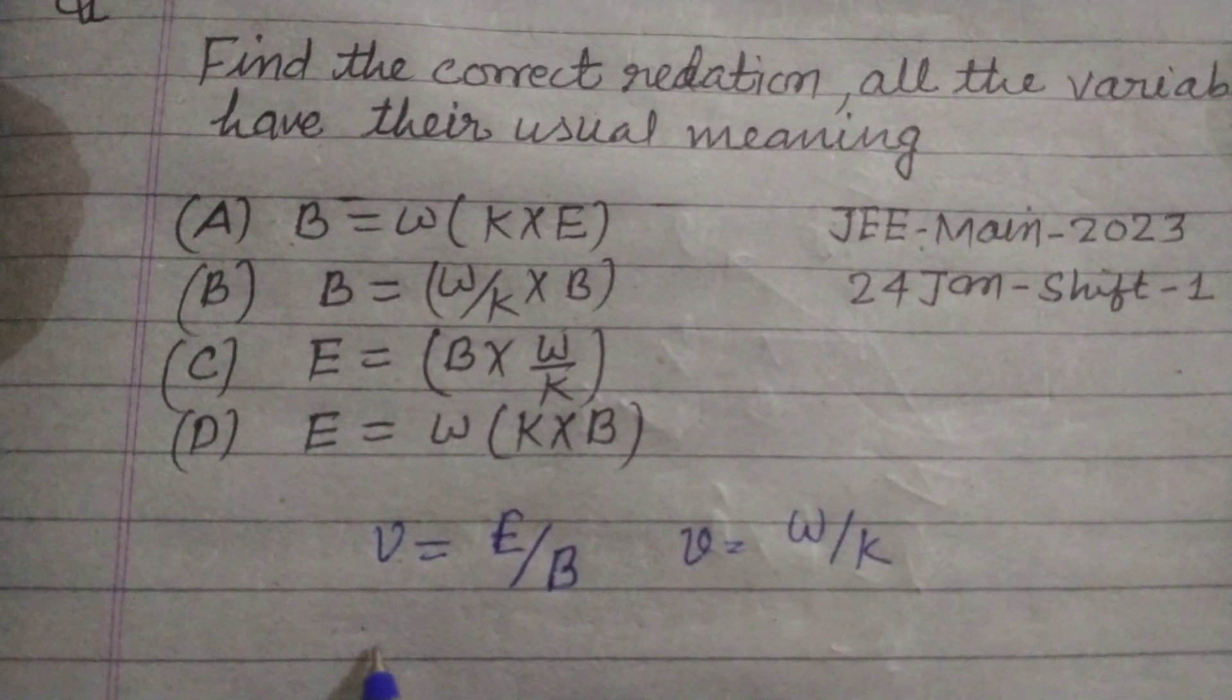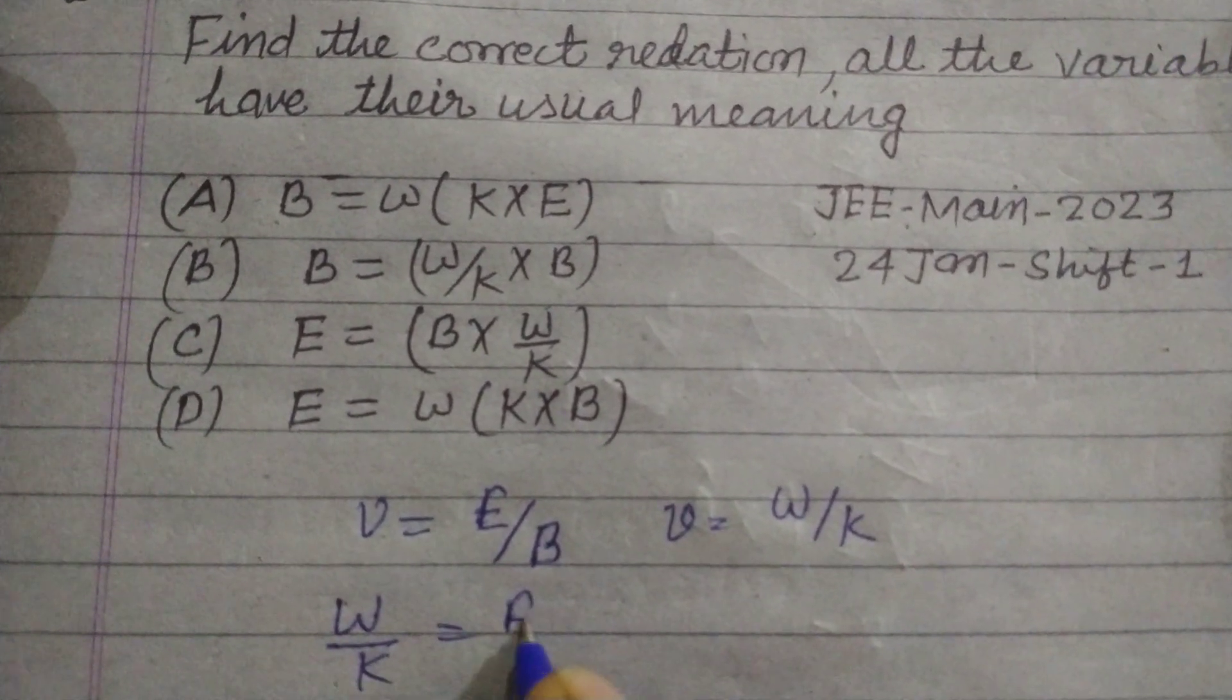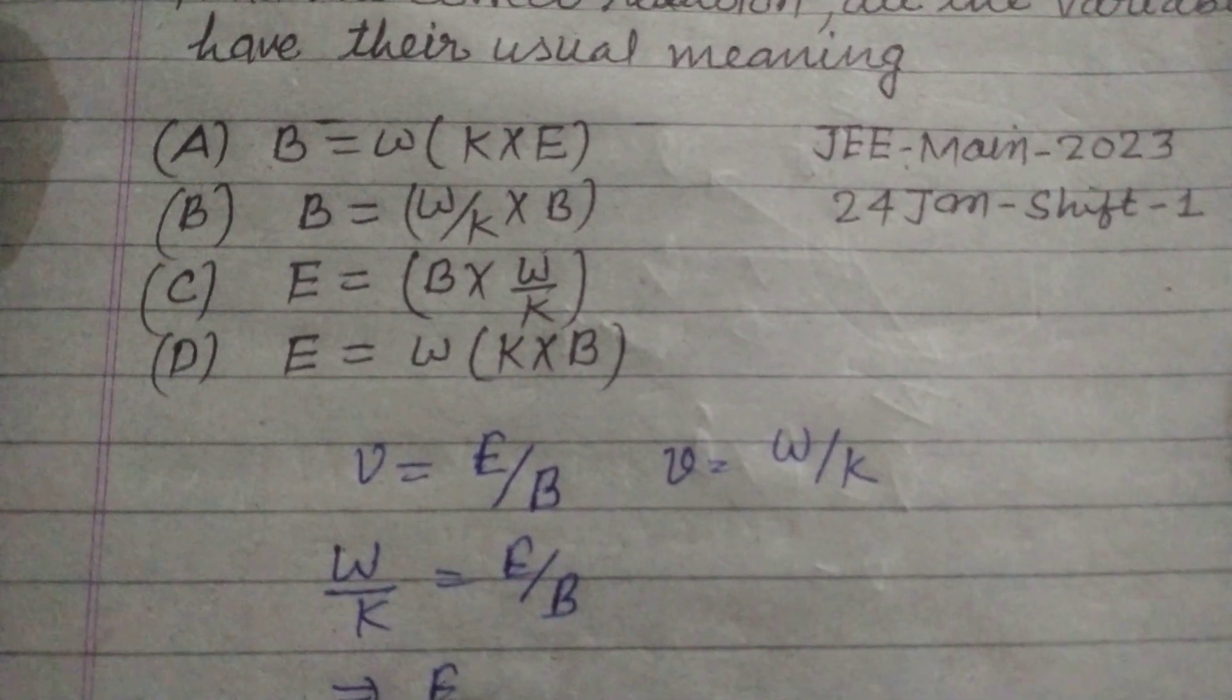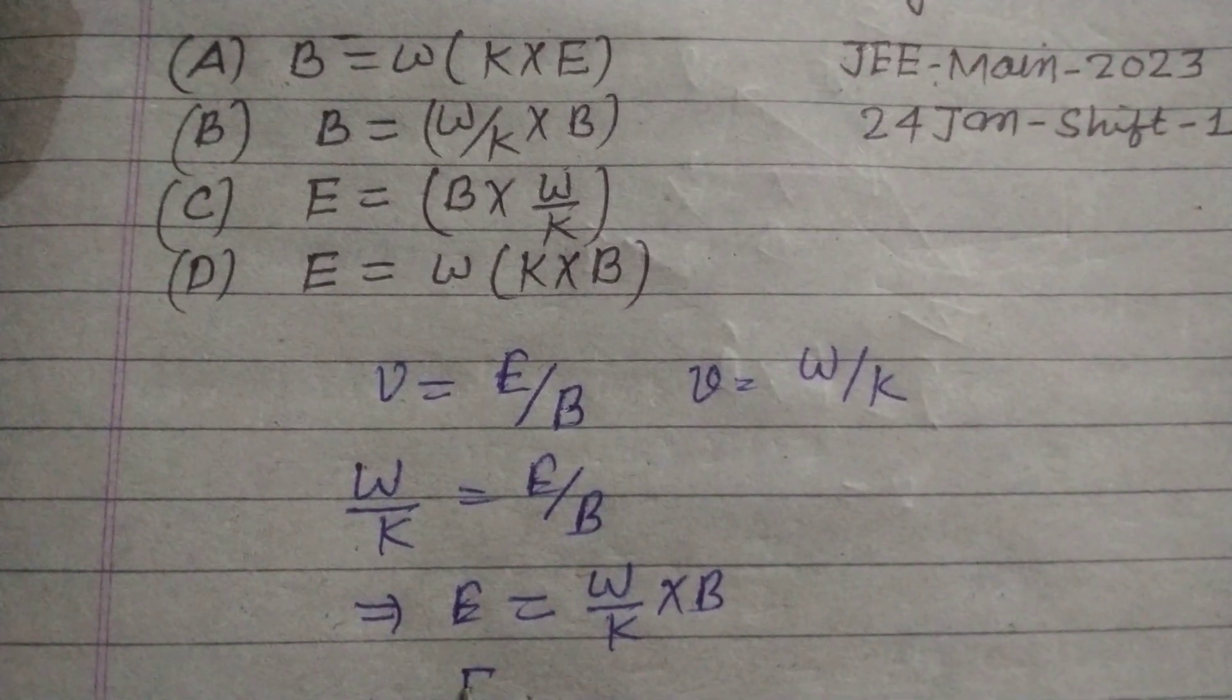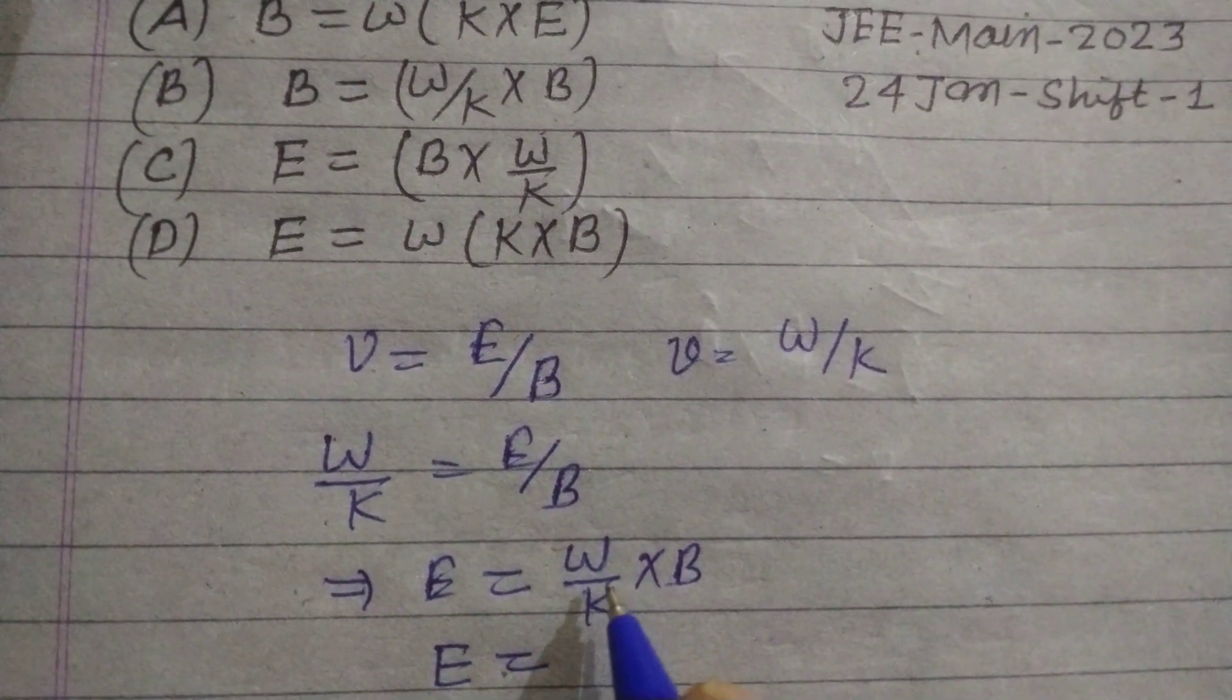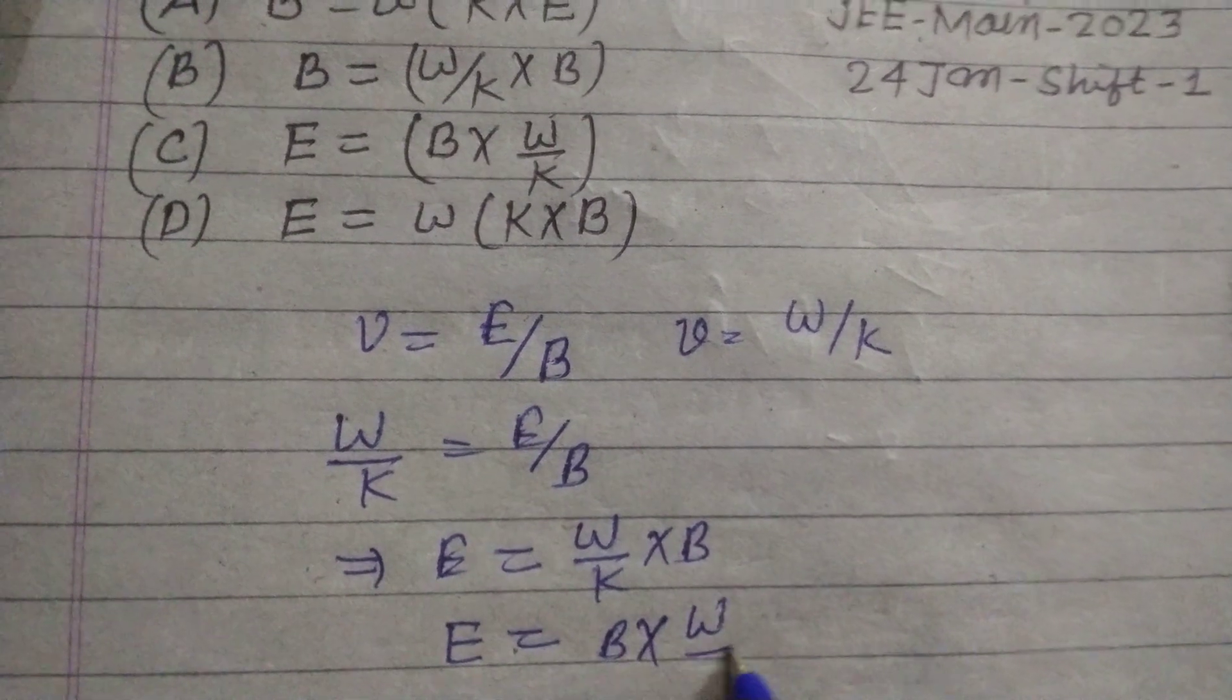So we put W upon K equal to E over B. It means E equal to W upon K into B. So E equal to W upon K into B or we write B into W upon K.